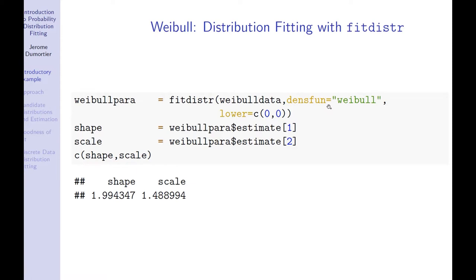In general, you need to have some idea of what type of distribution to use for your data. We are just generating the data and fitting the Weibull distribution. Note that the shape and scale parameters estimated will be different from what you see on the slides and also different from what you see on your computer, since this is randomly generated data, and there will be variations across various usages.